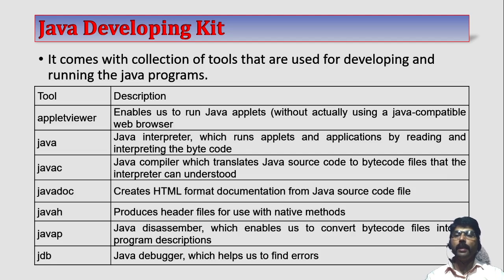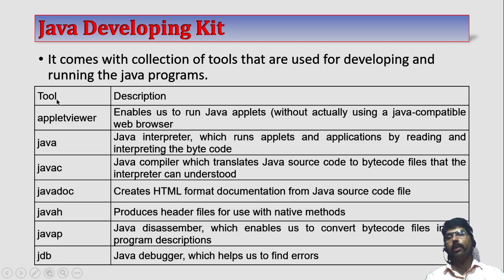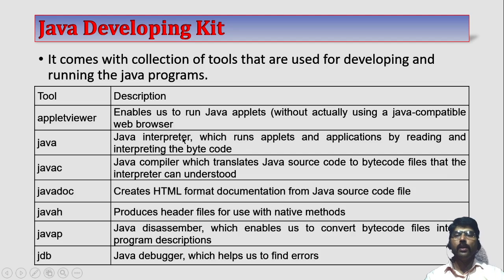An applet is a small Java program written for web applications. Applet Viewer is used to check whether our applet is working or not. Instead of embedding the applet into the web page, first we have to check it on a tool called Applet Viewer. This Applet Viewer enables us to run Java applets directly without using any web browser.